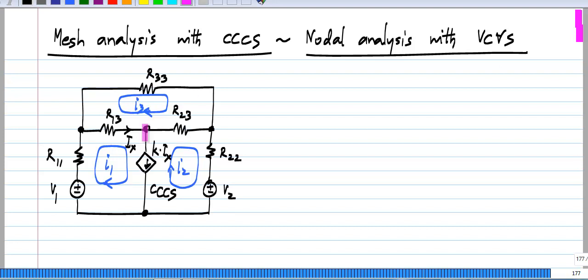Now, what is the problem with having a current source, whether it is independent or controlled? You do not know what the voltage across that is. When we write the equation around this mesh, we do not know what this voltage is without introducing an auxiliary variable for the voltage drop across the current source.